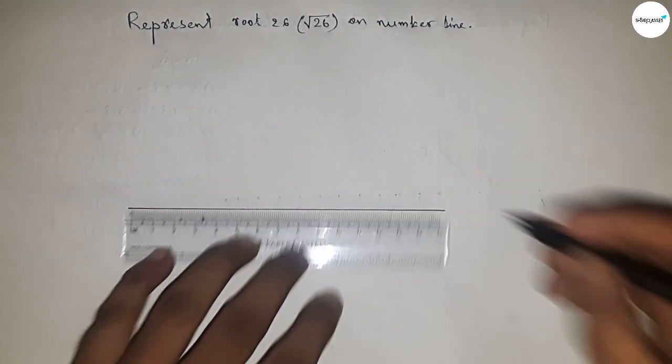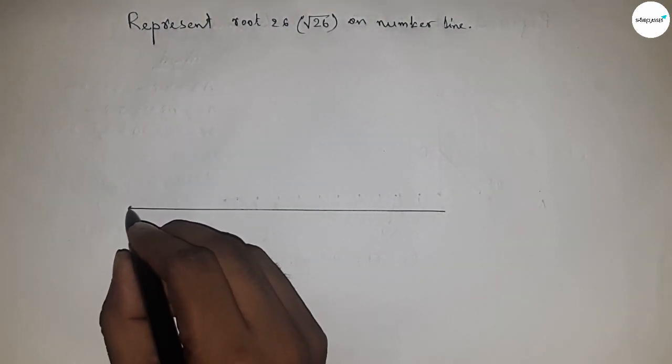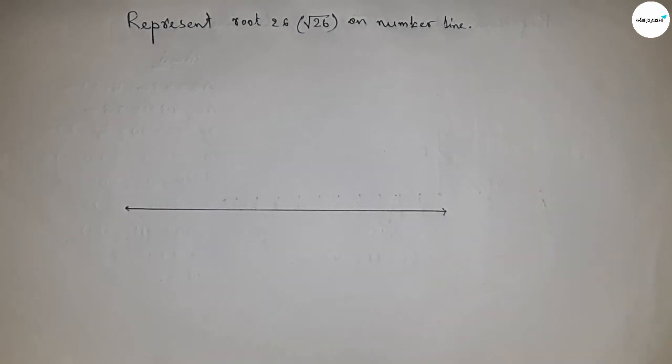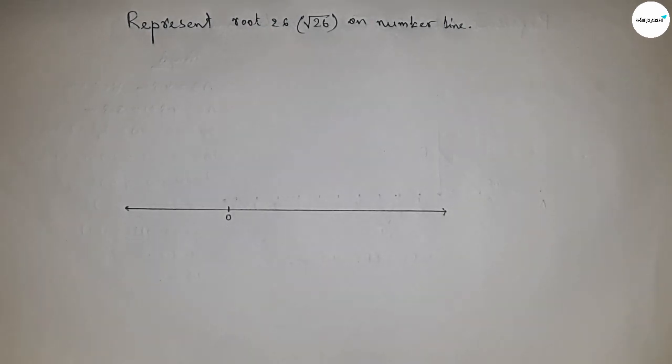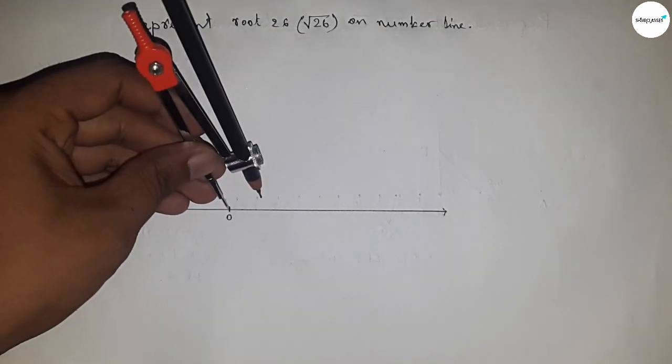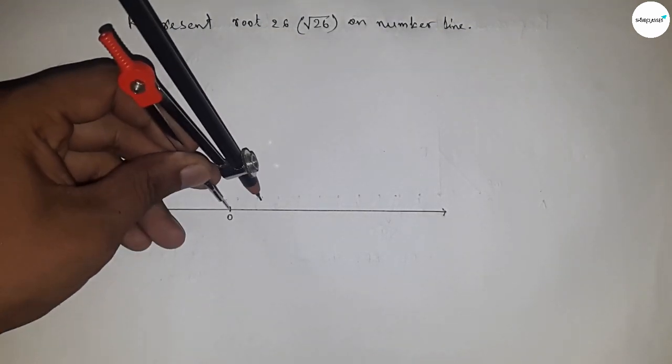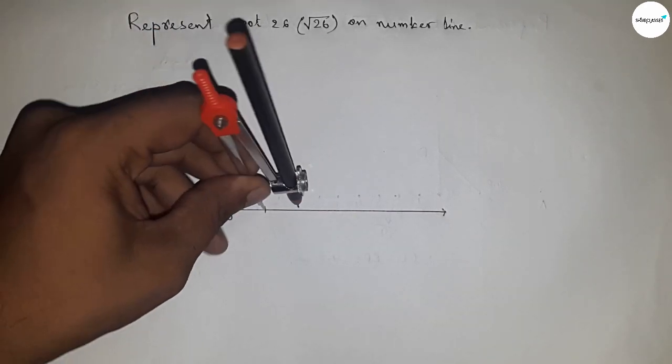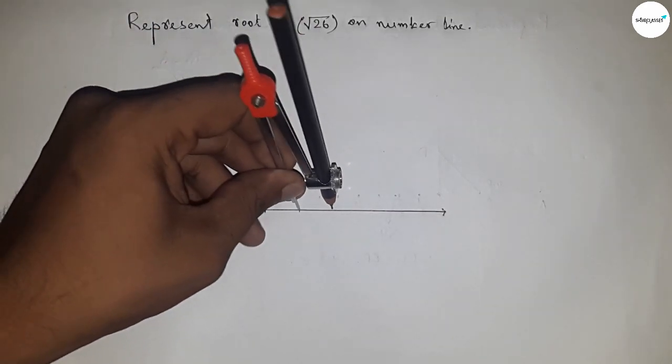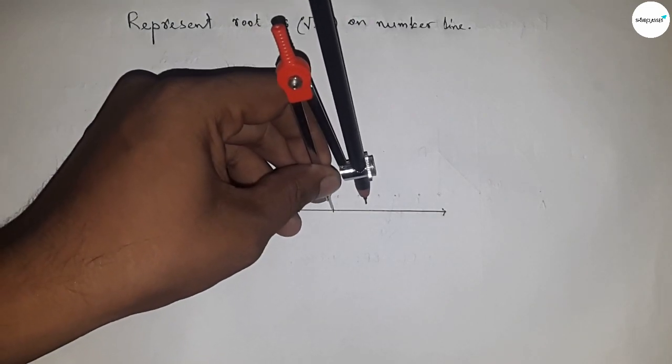First, draw a line of any length and mark the ends with arrows to represent a number line. Take this as starting number zero. Next, take any length by compass and mark the numbers on the line. All lengths are equal.